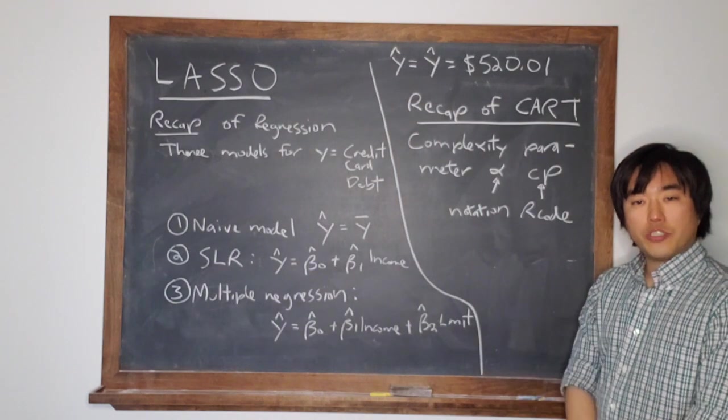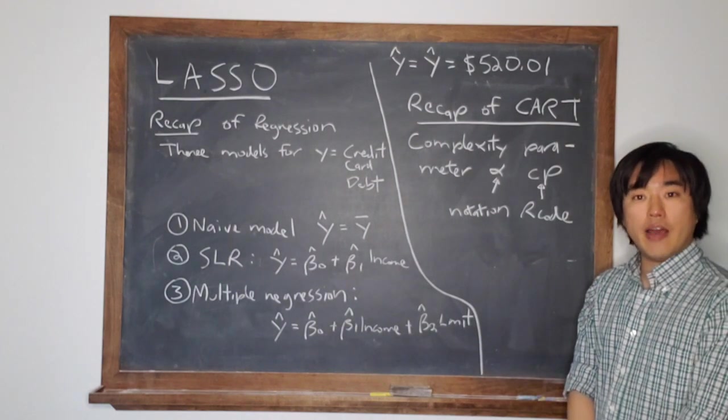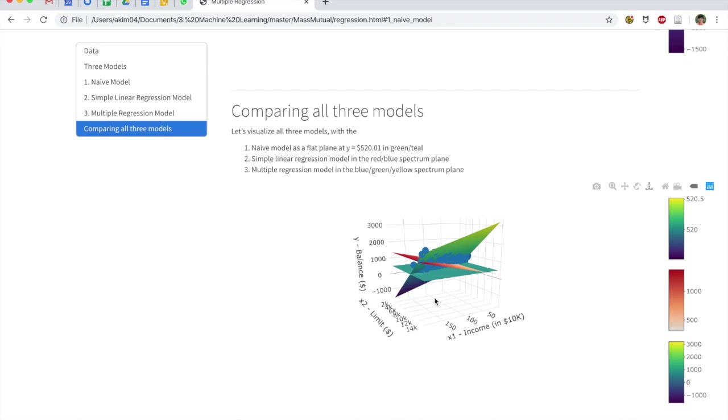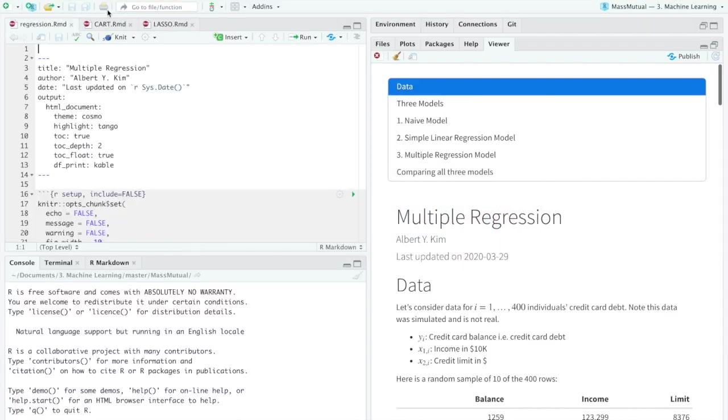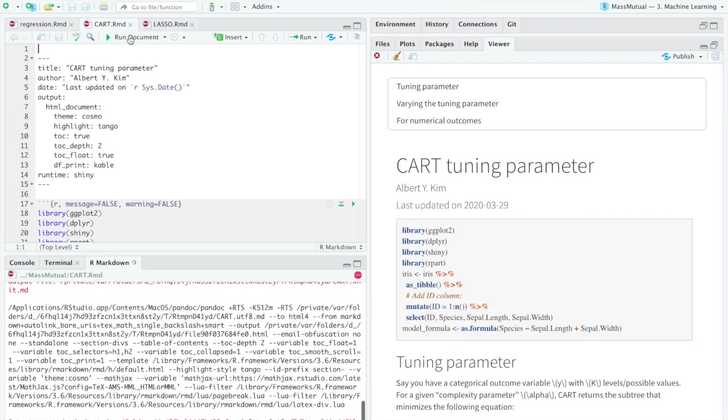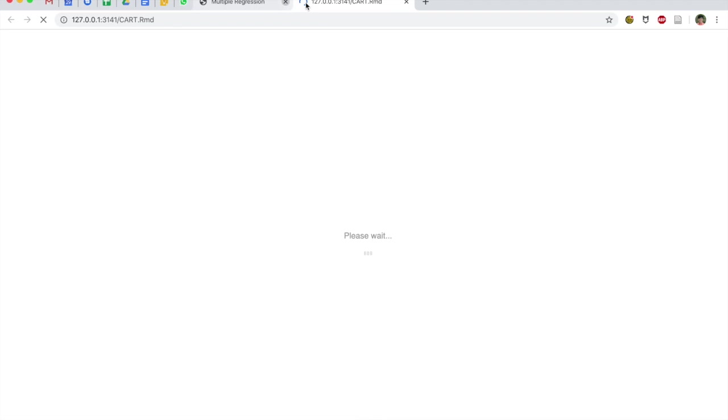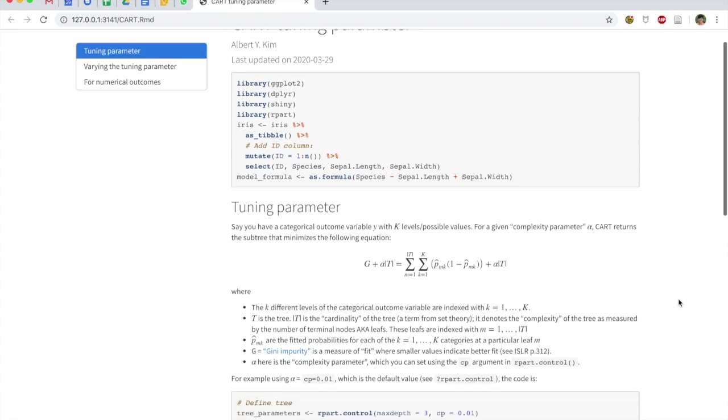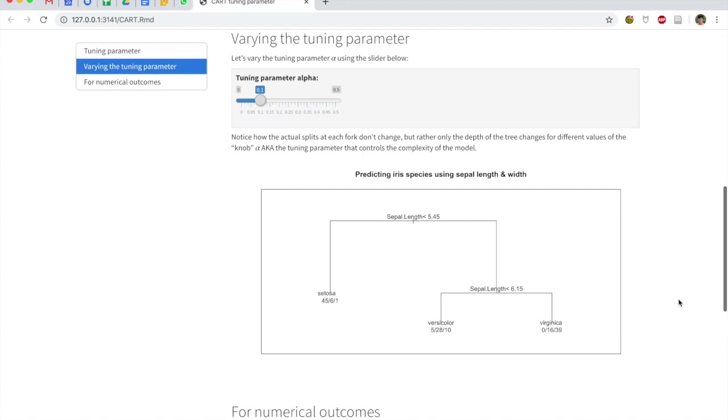So let's now go back to the cart.rmd shiny app and have a little recap of what CART does. So let's open up cart and run this document. And let's open that up in a browser window.